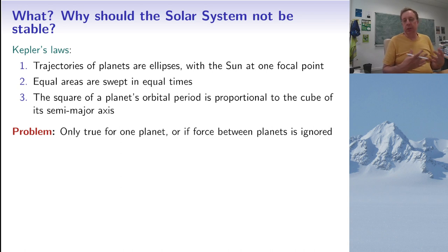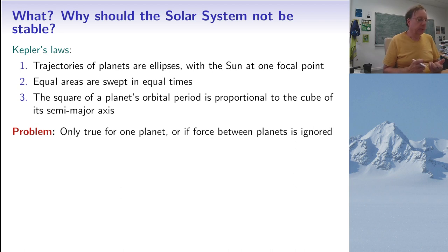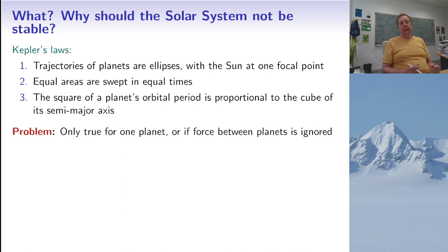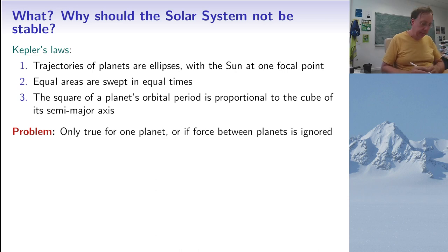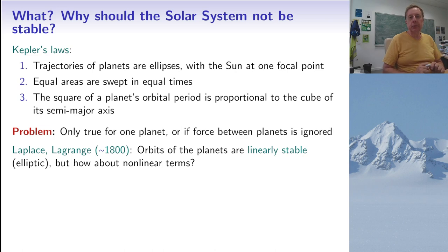The sun being much heavier than any planet means these corrections are very small, with no important consequence on the dynamics over short timescales. The orbits of the planets are still very close to satisfying Kepler's laws. But the question arises of what happens on very long time spans, like several millions of years. Astronomers have been aware of this problem for a long time, and around 1800 two well-known astronomer-mathematicians, the French Laplace and the Italian Lagrange, were able to do computations.